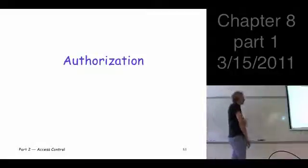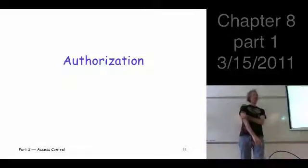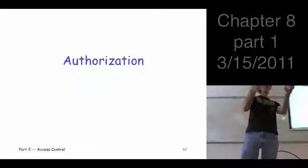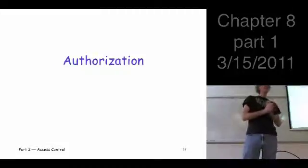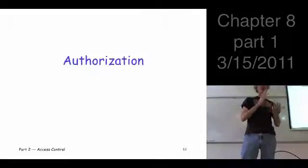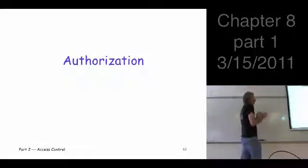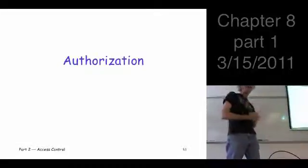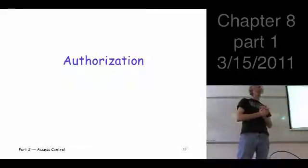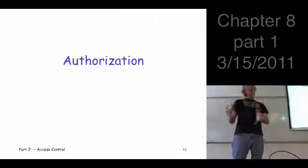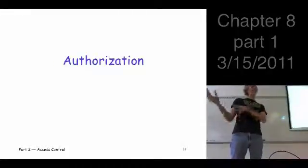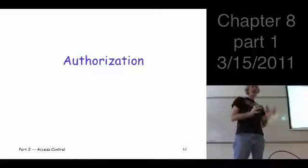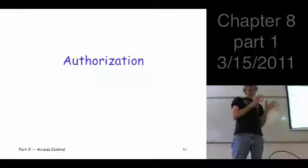Chapter 8 is kind of the first place where we have to make a decision about what we're going to do for the rest of the course. There are sort of two paths. One option is to do Chapter 8 really quickly — like I used to do every time I taught the class, literally spending a day on it, skipping most of the chapter and covering just the very basic, most important things. That would save us enough time to spend more time at the end talking about software issues.